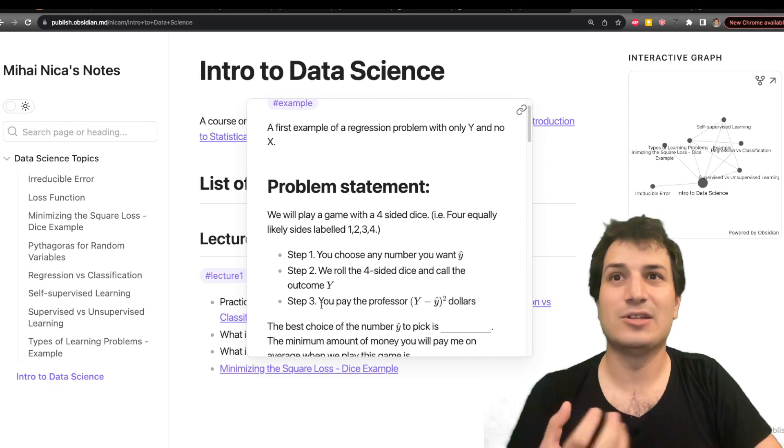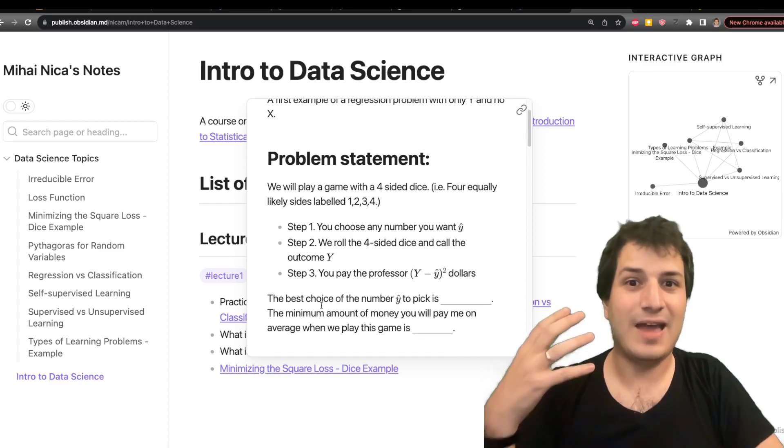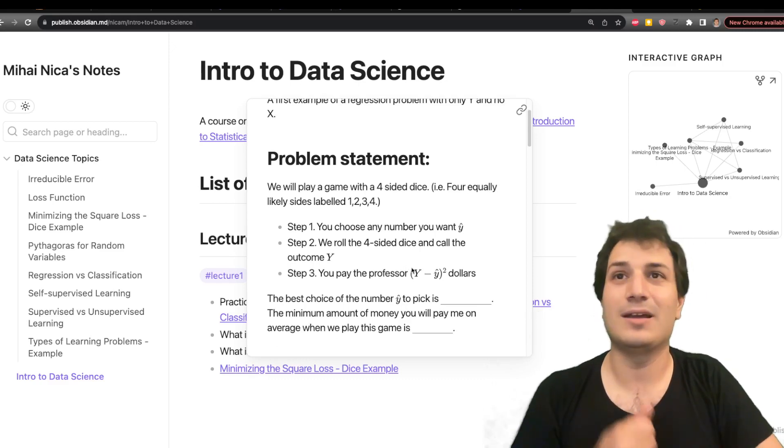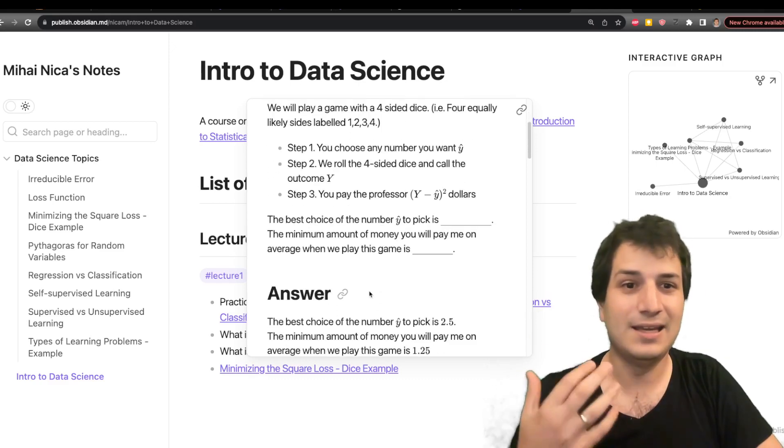What is the best choice of the y-hat to pick that minimizes how much you pay out when you pay the squared loss? Okay and that we did that in some detail.